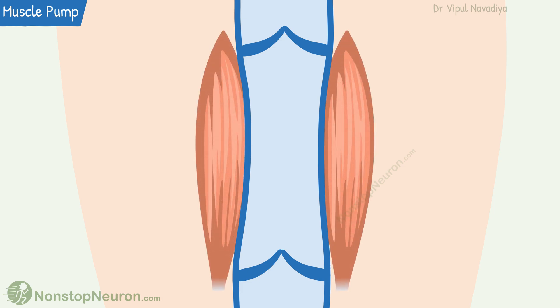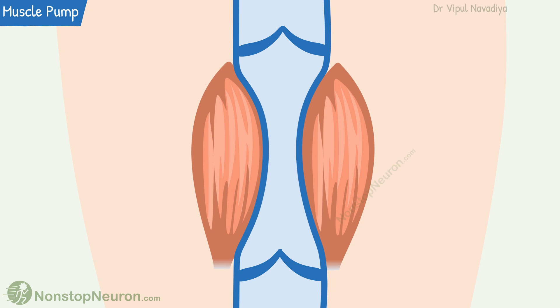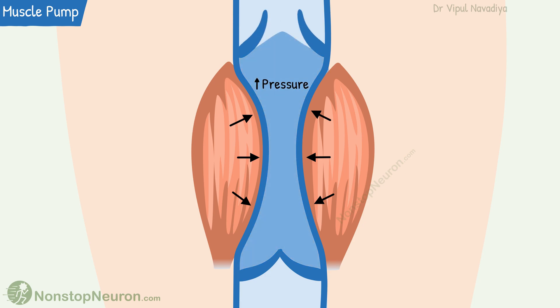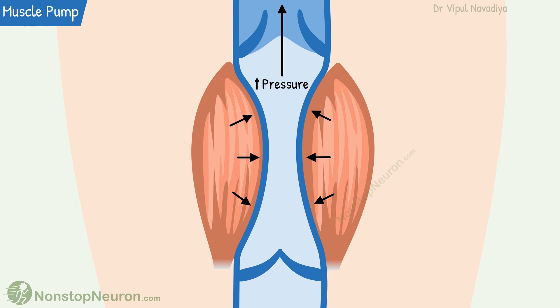The next factor is the muscle pump. Many veins lie in between skeletal muscles. When these muscles contract, they compress the vein, so there is a local increase in pressure inside the vein. This opens the valve towards the heart and the blood in this segment of the vein is pumped up. The increased pressure also tends to push blood down, but this results in the closure of the lower valve, so backflow is prevented.